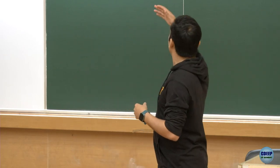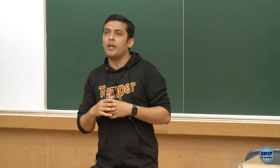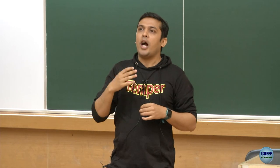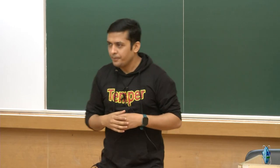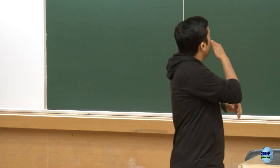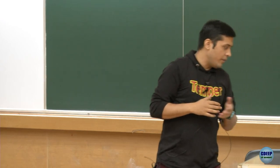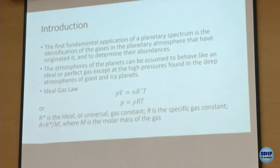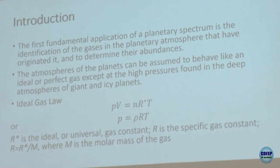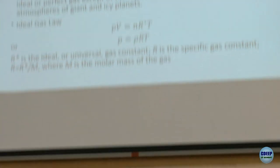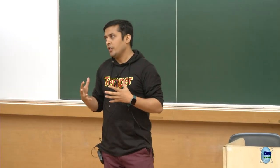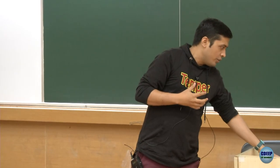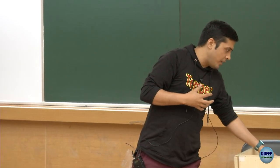Gas giants are mostly made up of hydrogen and helium — more than 90 percent. Coming to the introduction: we learned about spectroscopy in the last class. This lecture is an application of that spectroscopy in a broader sense. We are going to use the principles of spectroscopy to identify gases in planetary atmospheres.